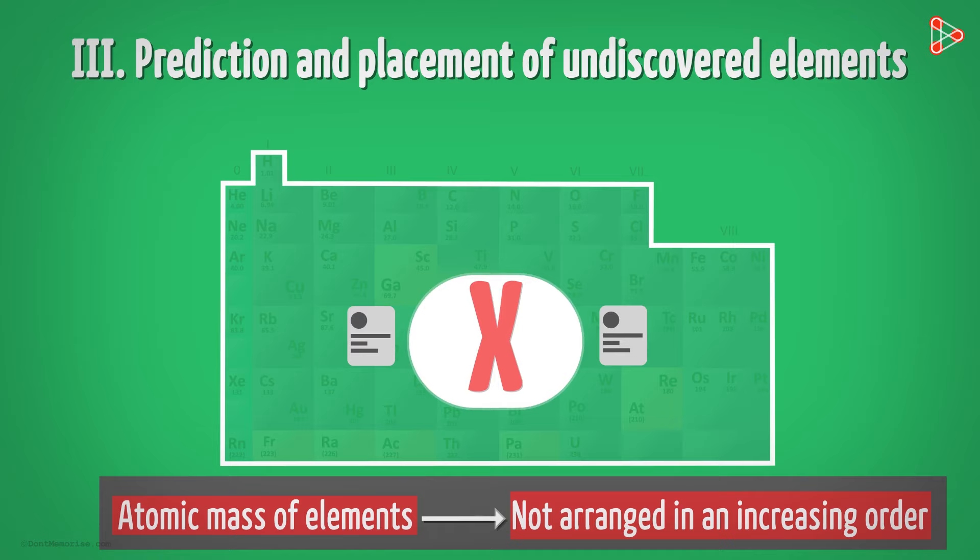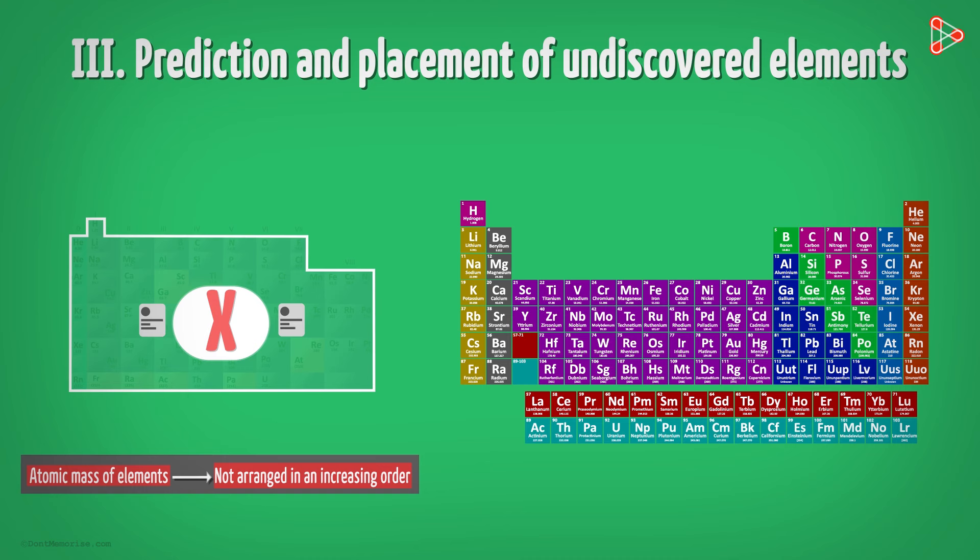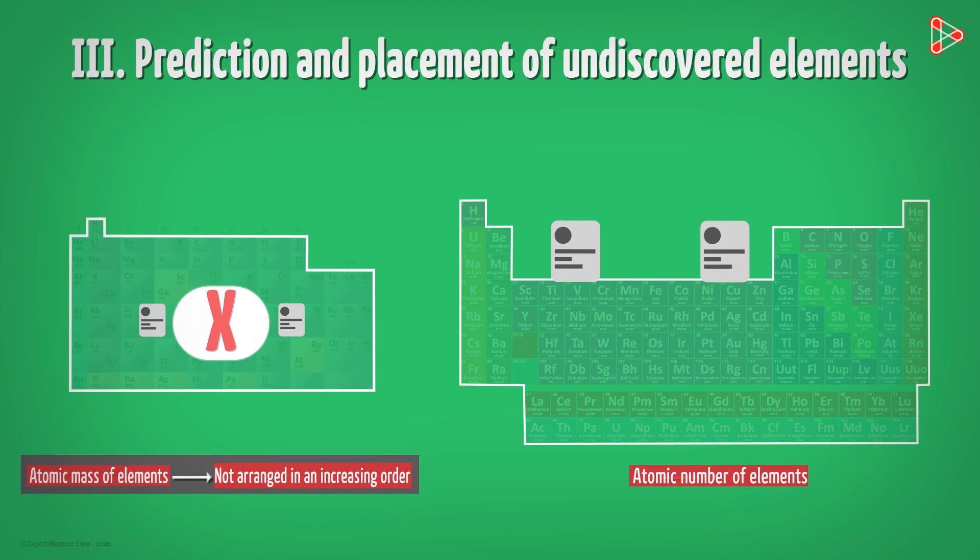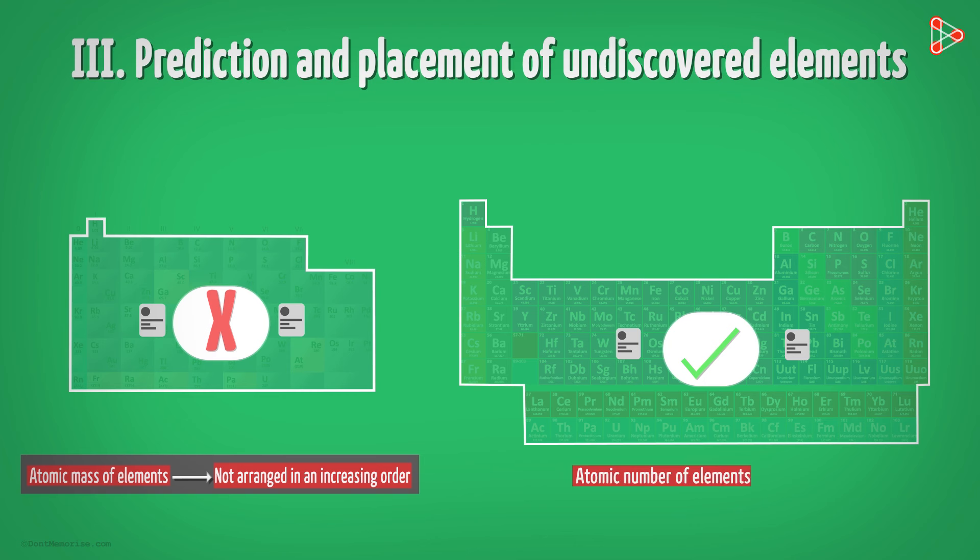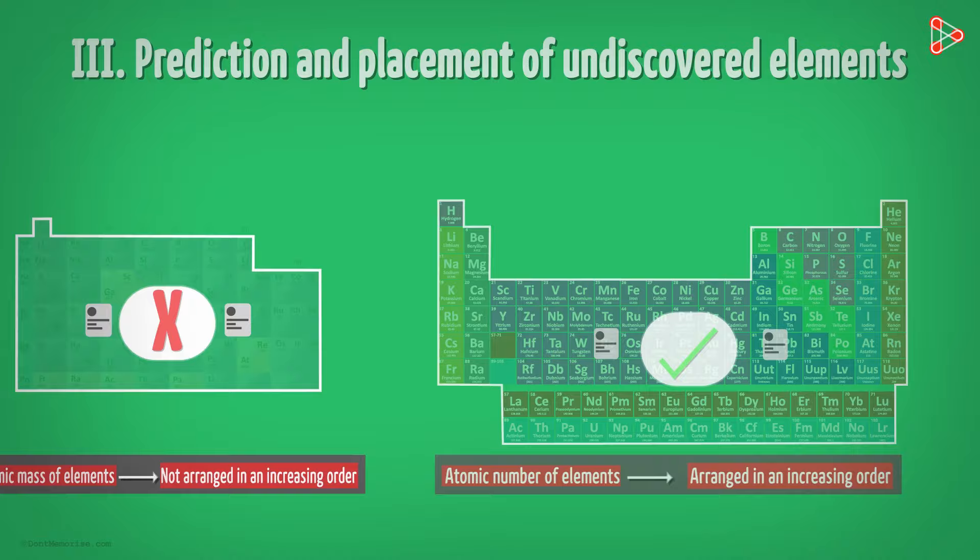So placing the newly discovered elements will disturb the entire table. But in the modern periodic table, the position of elements was based on atomic numbers. So newly discovered elements could be easily added in between. Because the atomic numbers of elements are found to occur in a constantly increasing manner. This is how the important limitation of Mendeleev's periodic table got ruled out.